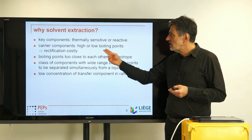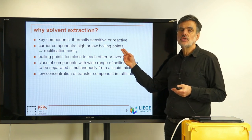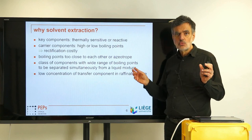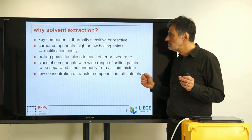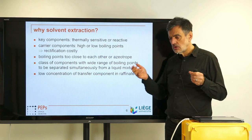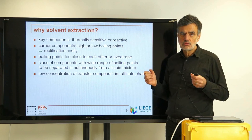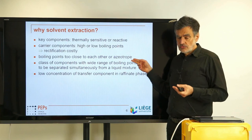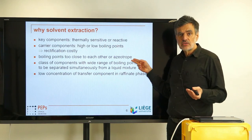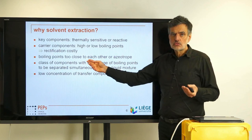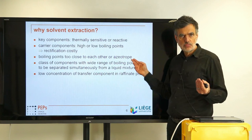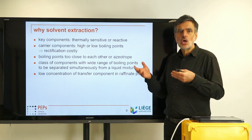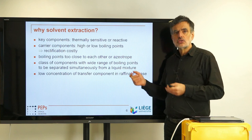Another case is when components have very high or low boiling points, requiring operation at low or high pressure. This means thicker column walls and more expensive equipment; heating or cooling at extreme temperatures is also more expensive. Furthermore, if the driving force for distillation is insufficient — meaning the vapour-liquid equilibrium is poor because boiling points are close together or you have an azeotrope where the compositions in vapour and liquid are identical — you have to think about other separation processes. You can add other components as tricks, or you can consider solvent extraction.